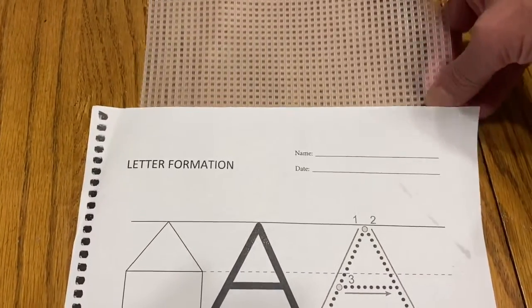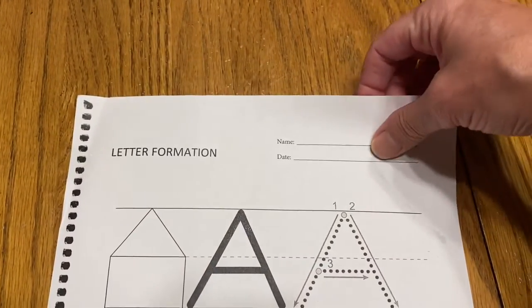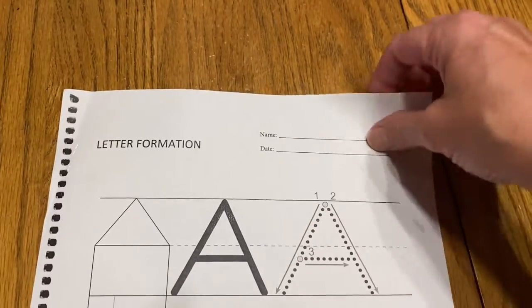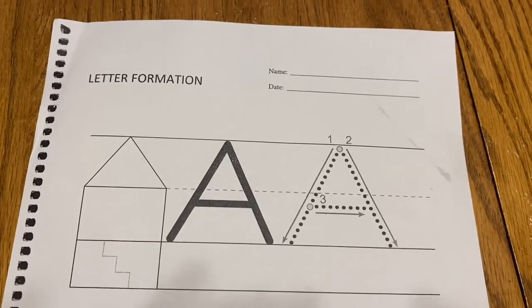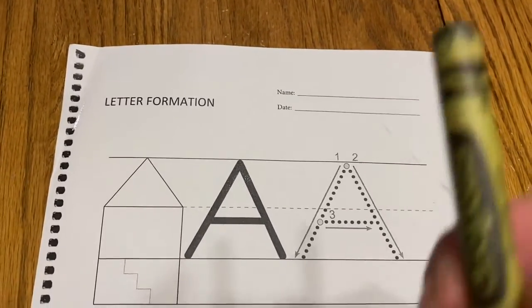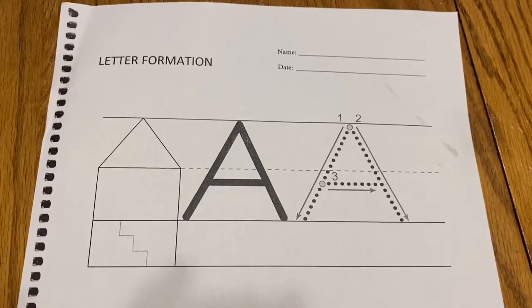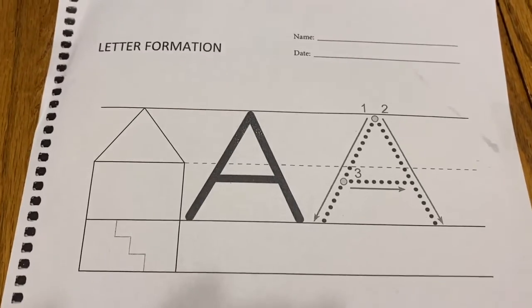Put your bumpy screen right under page nine so that the only page on top of the bumpy screen is page nine. Then take your green crayon and we're going to practice the uppercase A.